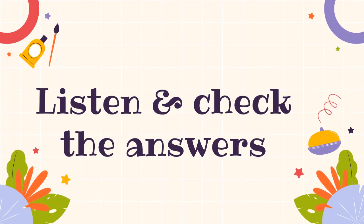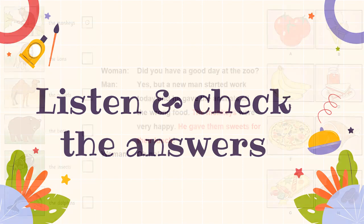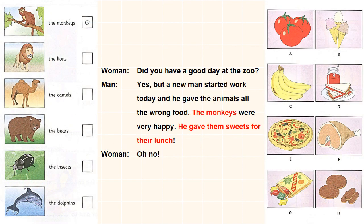Listen and check the answers. Did you have a good day at the zoo? Yes, but a new man started work today and he gave the animals all the wrong food. The monkeys were very happy — he gave them sweets for their lunch. Oh no!